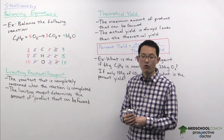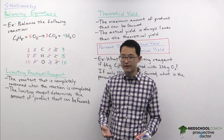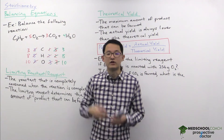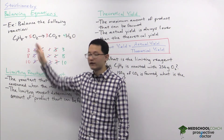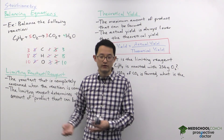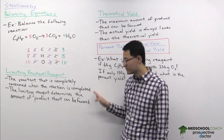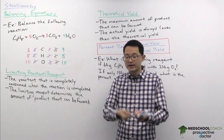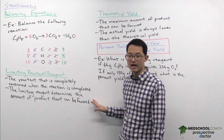Moving on, let's look at the limiting reactant or limiting reagent. This is the reactant that is completely consumed when the reaction is complete. For every molecule of propane we need five molecules of oxygen — a one-to-five ratio. However, if your reactants are not added in a one-to-five ratio, one of the two reactants will be used up first and the other will be in excess. The reactant used up first is the limiting reagent, and it determines the amount of product that can be formed — once it's used up, the reaction can't proceed.